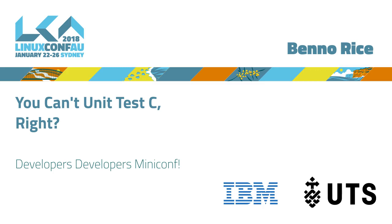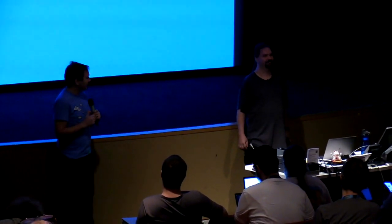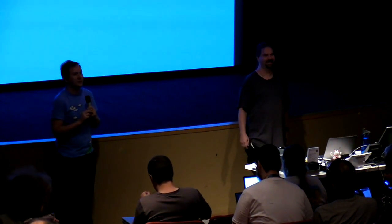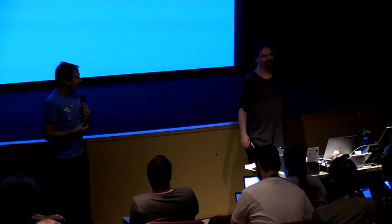Our first presenter is uniquely qualified to give this talk for two reasons. The first is that he has written a unit testing framework, and the second is that he has written a whole bunch of C in a context where unit testing is quite difficult. He's volunteered to give this talk, which indicates he has probably thought at least a small amount about it. Benno Rice lives in Seattle, works on FreeBSD, and is going to talk about unit testing in C.